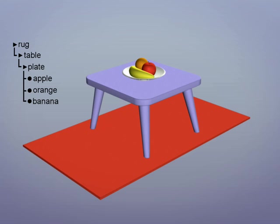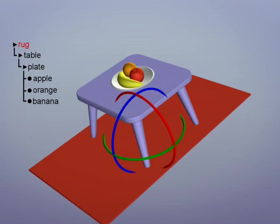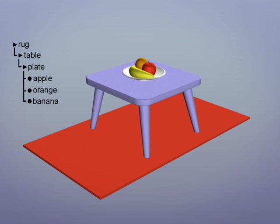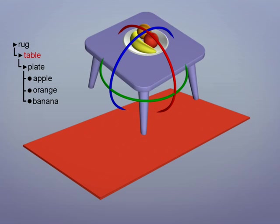In this structure, the rug at the top of the hierarchy moves everything below. The table leaves the rug behind because the rug is above in the hierarchy.